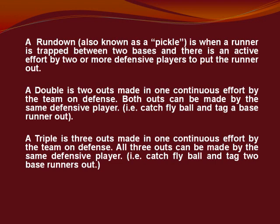A run-down, also known as a pickle, is when a runner is trapped between two bases and there is an active effort by two or more defensive players to put the runner out. A double play is two outs made in one continuous effort by the team on defense. Both outs can be made by the same defensive player — for example, he catches a fly ball, then tags the base the runner left and fails to return, for a tag out. A triple play is three outs made in one continuous effort by the team on defense. All three outs can be made by the same defensive player — for example, he catches a fly ball and then tags two runners out.